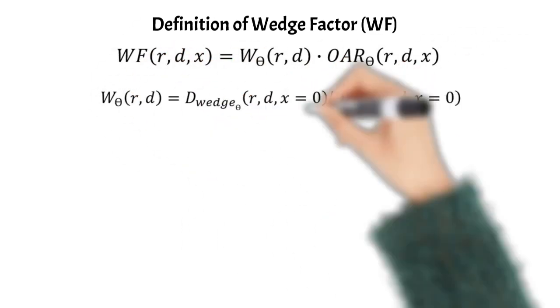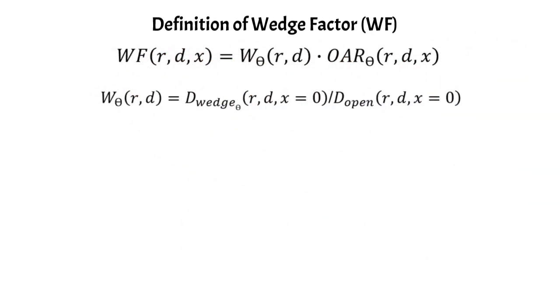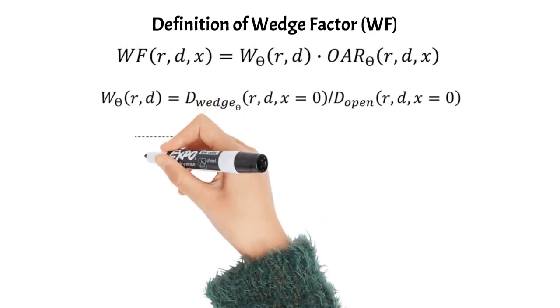The central axis wedge factor is easily measurable, as the second equation shows. We put the wedge in the beam, place the detector along the central axis, and deliver a certain number of MU. Then we remove the wedge, deliver the same number of MU, and take the ratio of those two dose measurements to get the wedge factor. We can also measure the off-axis ratio by measuring a beam profile.